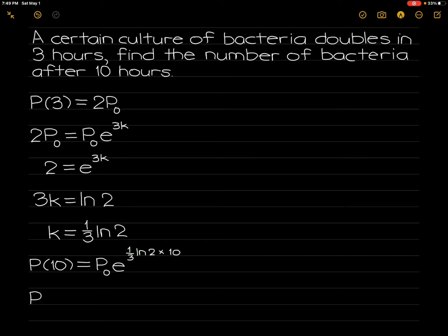So p(10) is equal to 2 raised to 10/3 times the initial population, which means that at 10 hours we have approximately 10 times the number of our initial population. Therefore, the number of bacteria after 10 hours is 10 times its initial population.